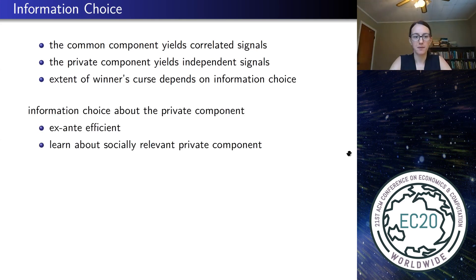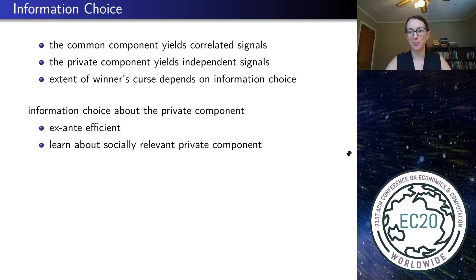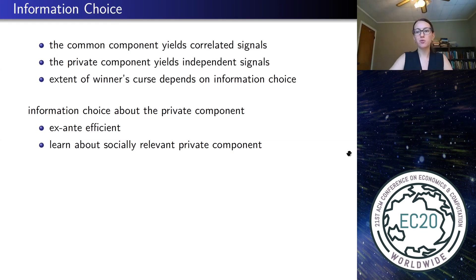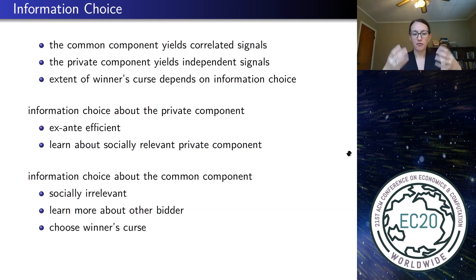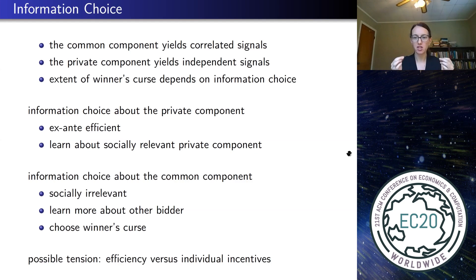From the perspective of efficiency, the object should go to the person who values it the most — the person with the highest private component, since every bidder shares the same common component. So from an efficiency perspective, bidders should not waste resources learning about something irrelevant for the efficient allocation decision; they should focus on their private components. From the perspective of the bidders, though, that's not necessarily what they want to do. By learning about something the other person also learns about, bidders can correlate their information and coordinate strategy depending on the auction mechanism, perhaps protecting themselves against the winner's curse. So there's a possible tension between efficient learning — about the private component — and individual incentives, which might depend on the auction format.